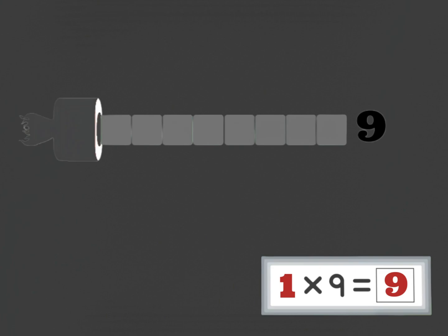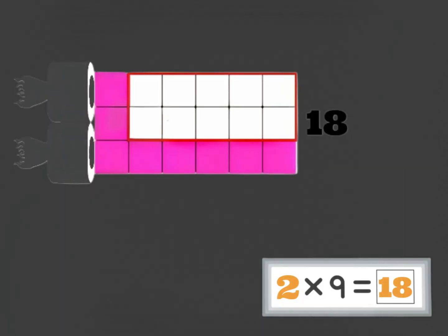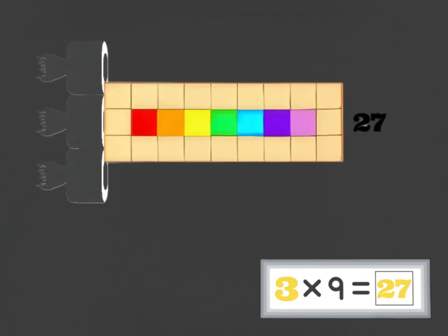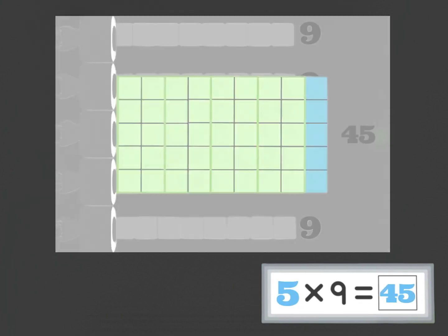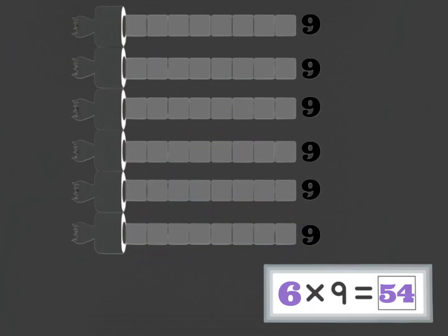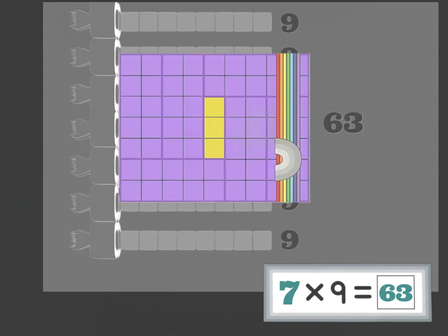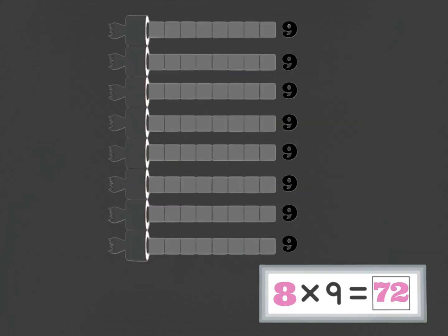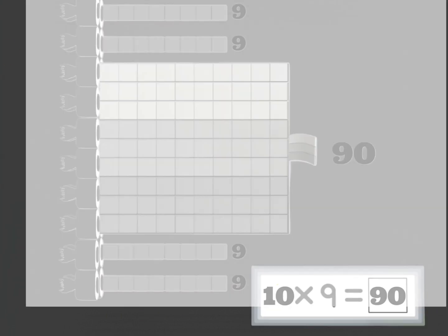One times nine is nine. Two times nine is eighteen. Three times nine is twenty-seven. Four times nine is thirty-six. Five times nine is forty-five. Time for nines to shine. Six times nine is fifty-four. Seven times nine is sixty-three. Eight times nine is seventy-two. Nine times nine is eighty-one. Finally the last in line. Ten times nine is ninety.